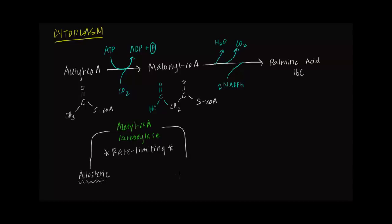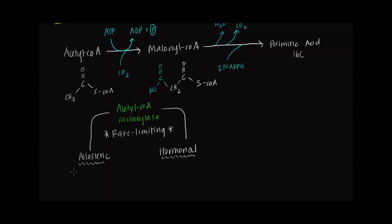Citrate is an allosteric activator of acetyl-CoA carboxylase, increasing flux through the pathway. This makes sense: the citrate shuttle brings acetyl-CoA to the cytoplasm, so more acetyl-CoA means we should make more fatty acids. Hormonally, insulin activates this pathway — after a meal, blood glucose rises, producing more acetyl-CoA, so we want to channel it into fatty acid synthesis.